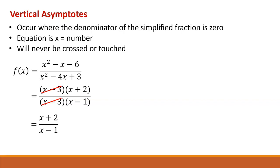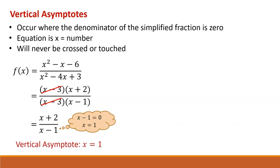Vertical asymptotes occur where the denominator of the simplified fraction is equal to 0. So we have to ask ourselves, when is x minus 1 equal to 0? That's when x equals 1. So our vertical asymptote is the line x equals 1.